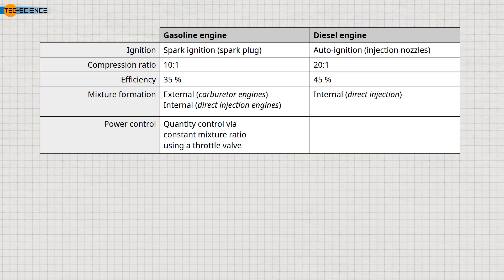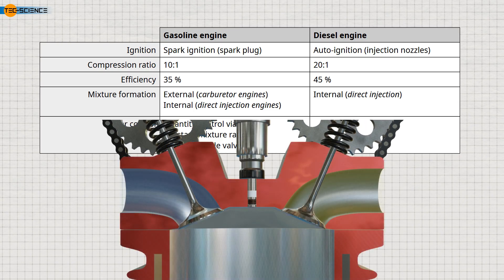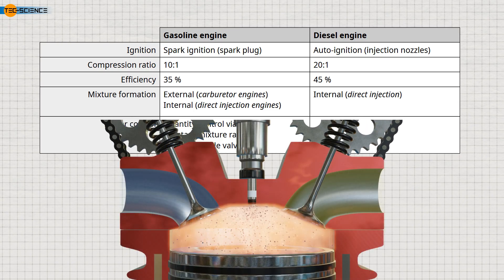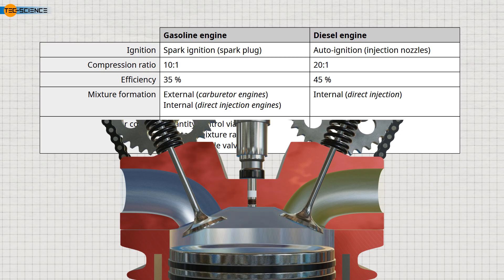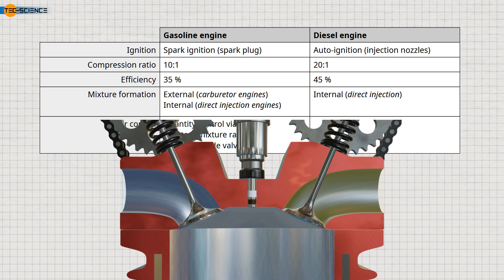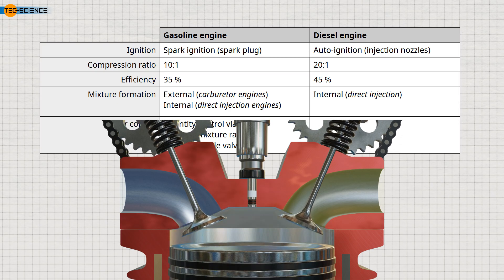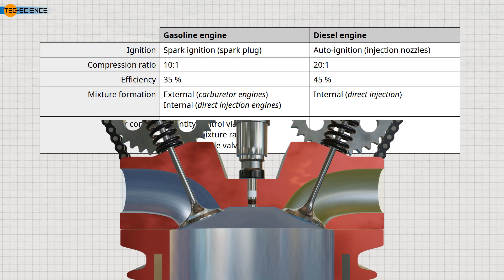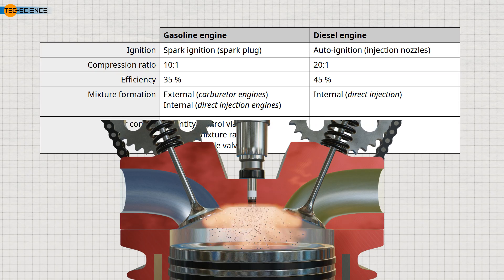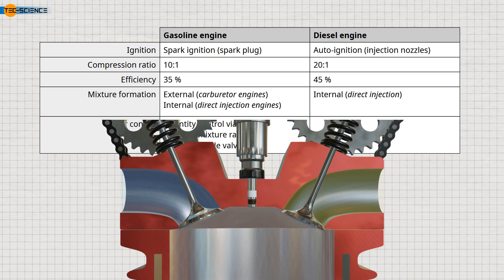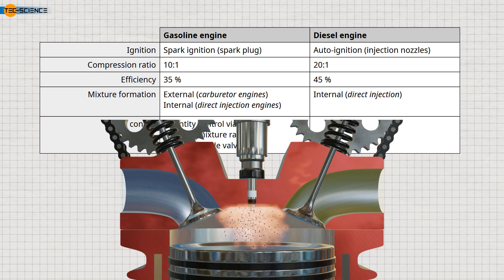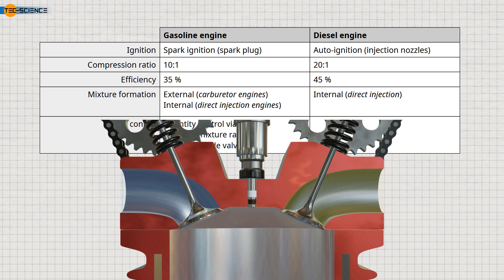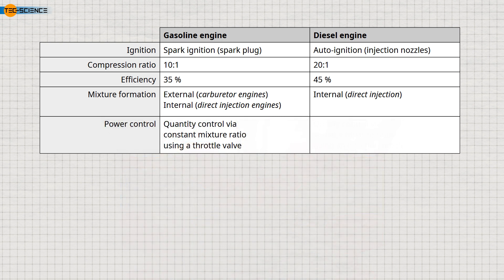The air-fuel ratio remains the same, but the total amount of charge entering the engine varies with the position of the throttle valve. In contrast, diesel engines do not regulate power by the amount of intake charge and therefore do not have throttle valves. Instead, diesel engines always take in the same amount of air, and power is controlled by varying the amount of diesel fuel injected and ignited. This method is called qualitative mixture control.